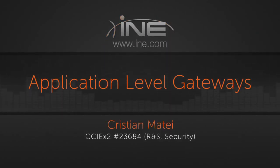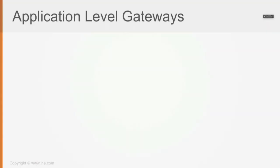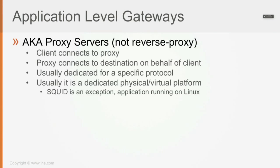If the switch receives the packet, you wouldn't want to drop the packet outbound at its closest point to the destination — it doesn't make sense. Then application level gateways, as we were speaking about, are also known as proxy servers, but those are not reverse proxy.